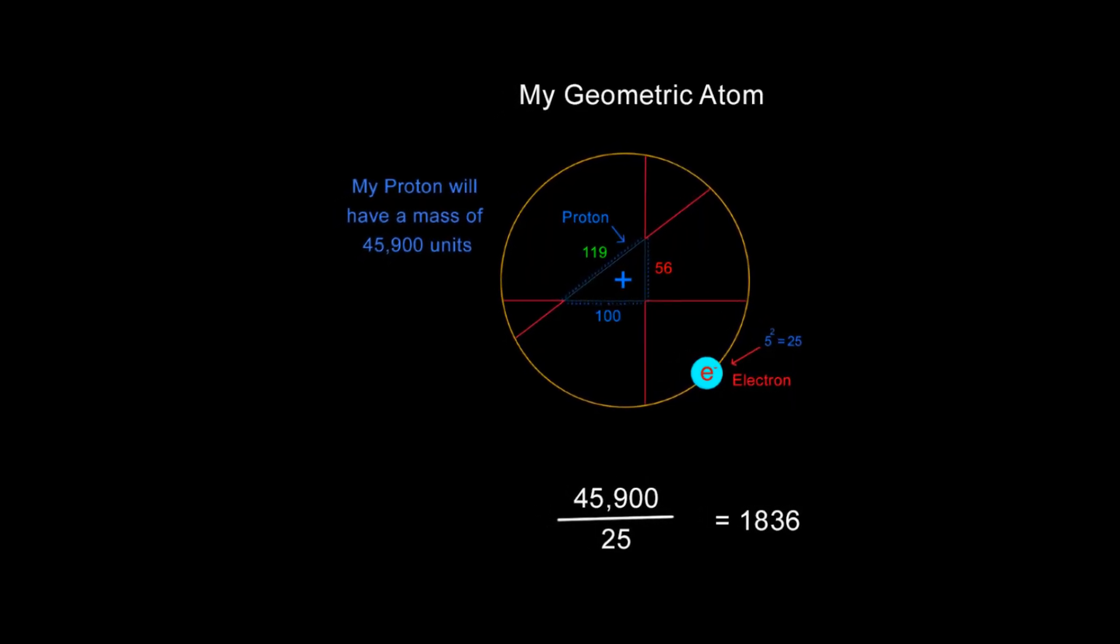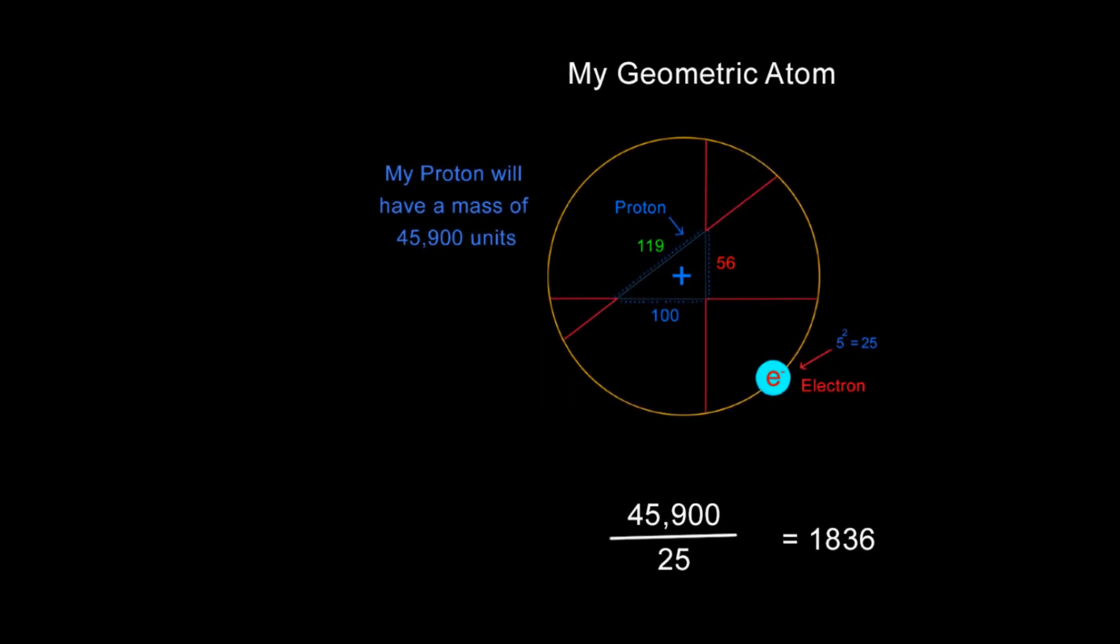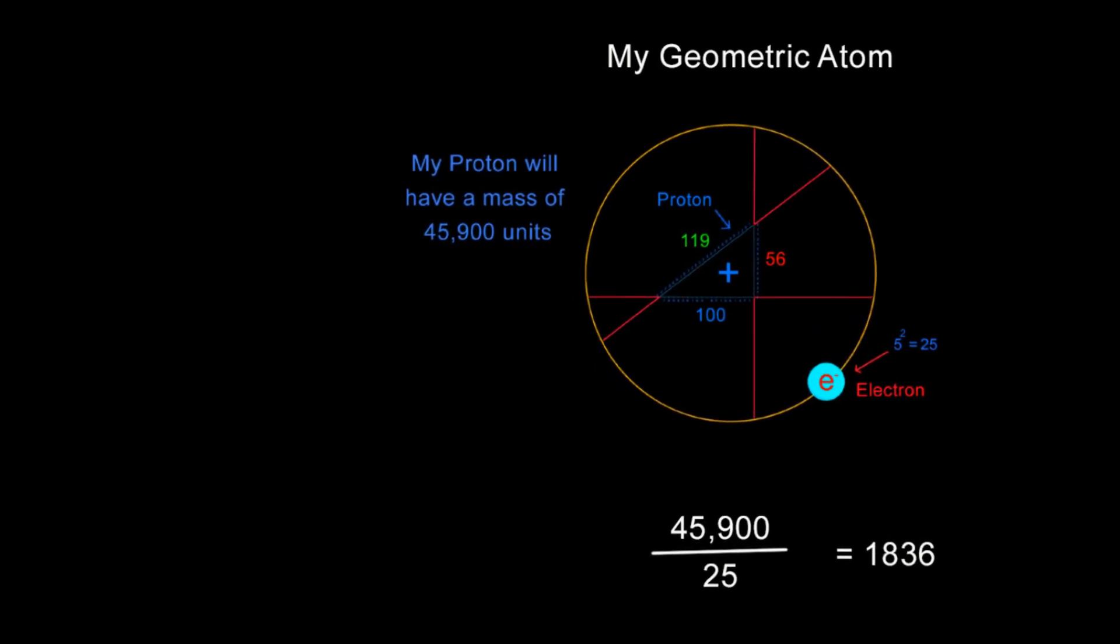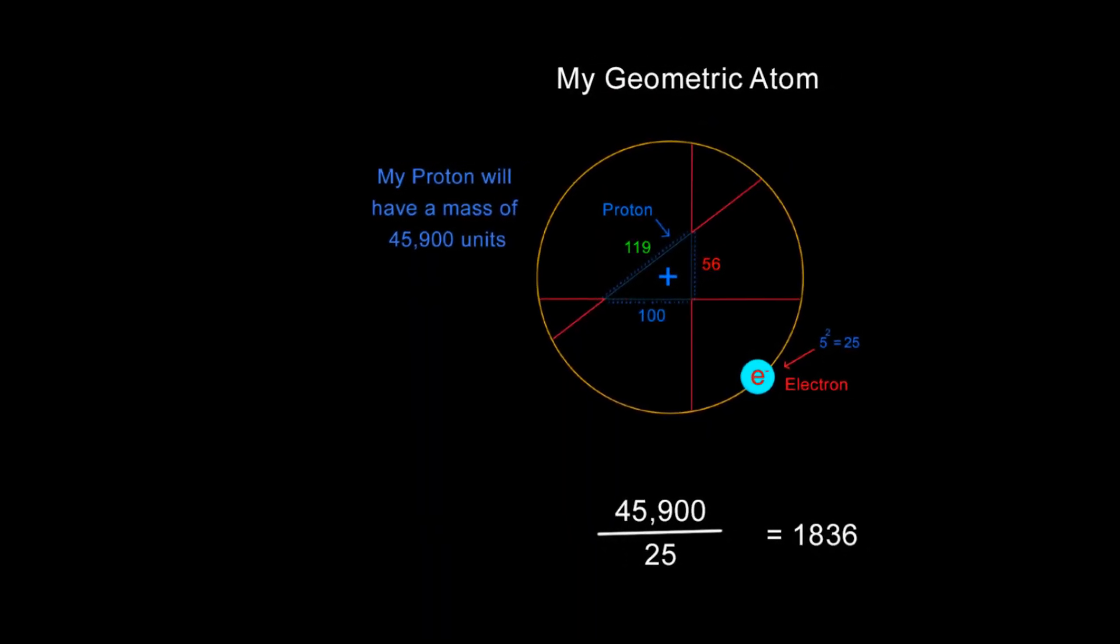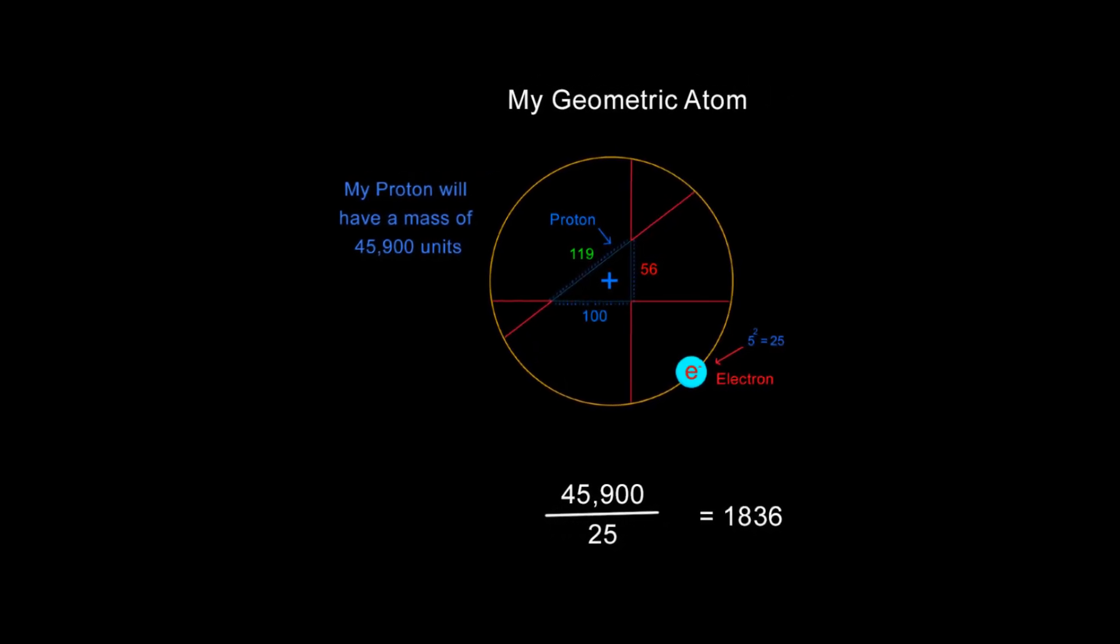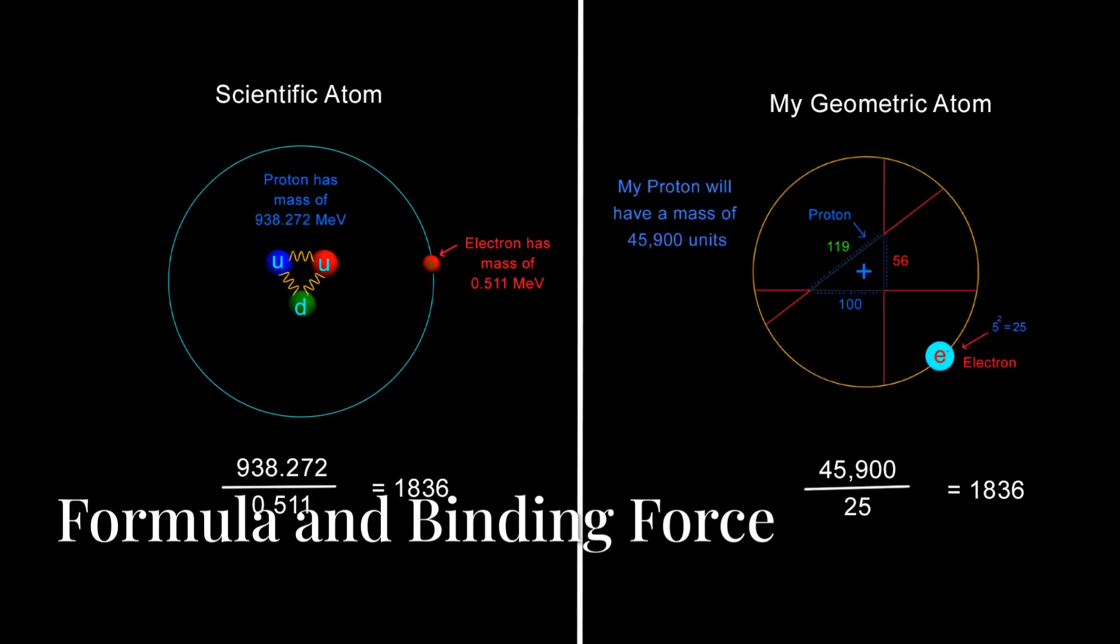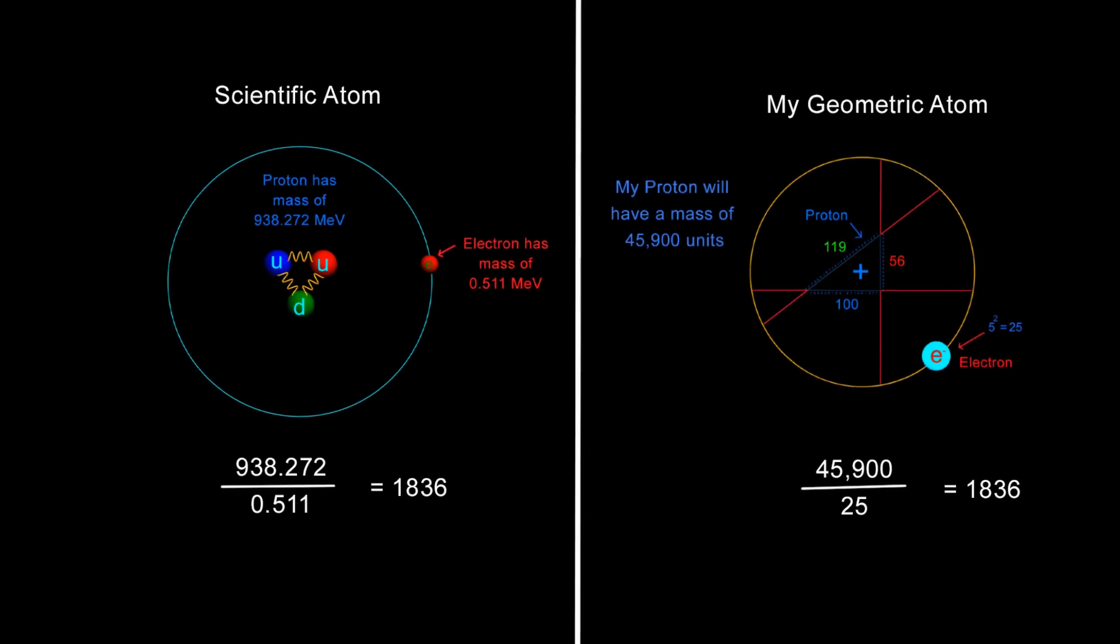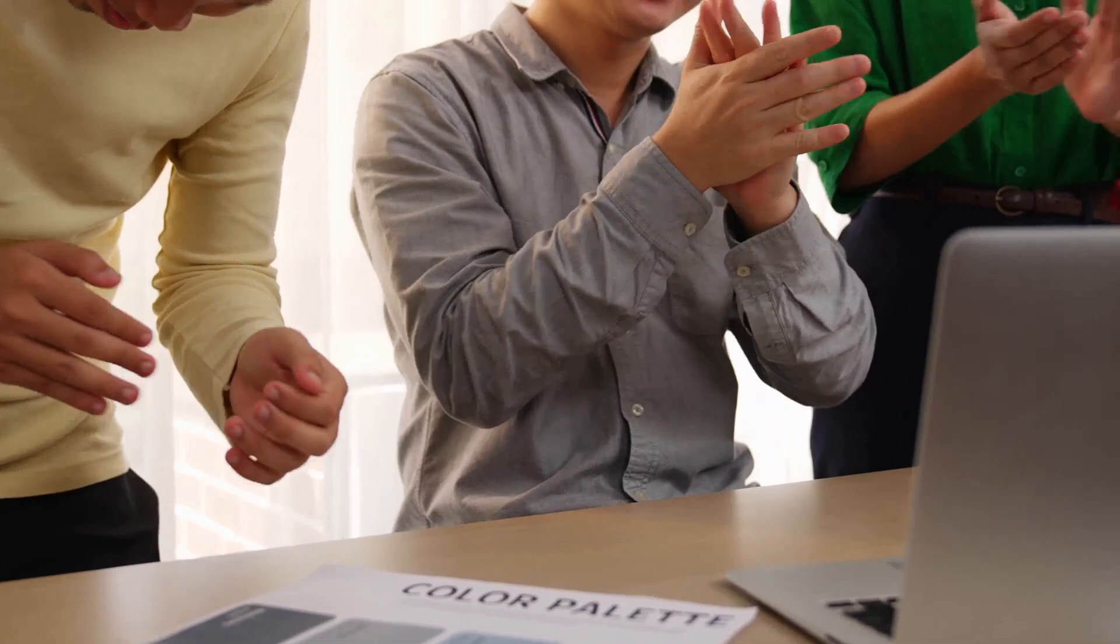Not only was this artificial intelligence able to predict that my electron would be an ejected 5, it then calculated the value for my virtual proton using information from the Fibonacci hypotenuse triangle. Remember, these are all virtual units derived from my mathematical model, which predicts that the universe is fundamentally a mathematical construct. This direct symmetry to the actual ratios between a real proton and electron found in nature was mind-blowing. This was like a complete validation of everything I had been saying.